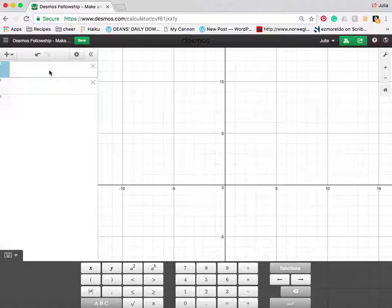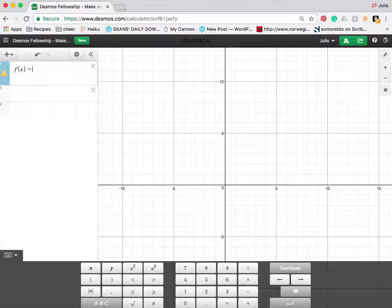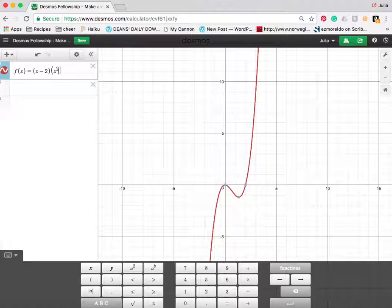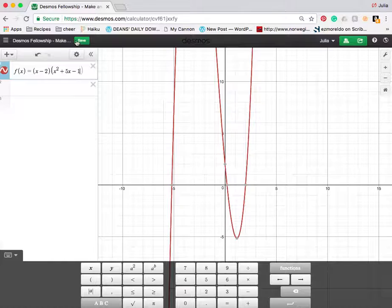My first step is to create whatever function I want. I'm going to do f(x) = (x - 2)(x² + 5x - 1).